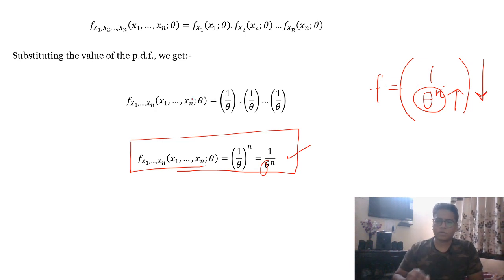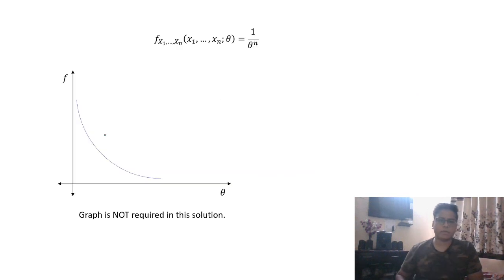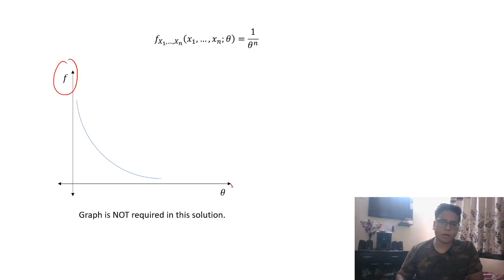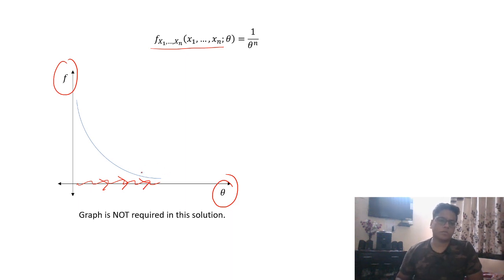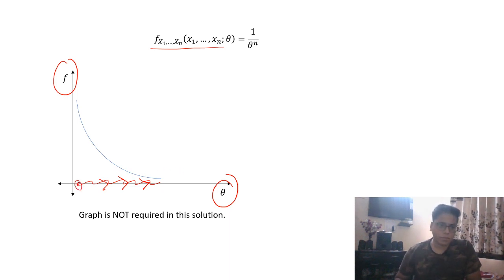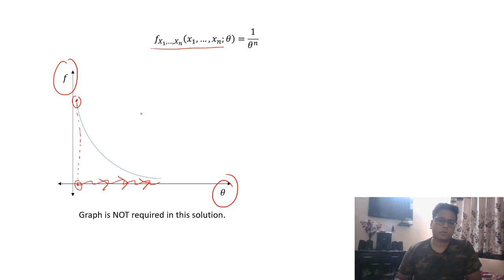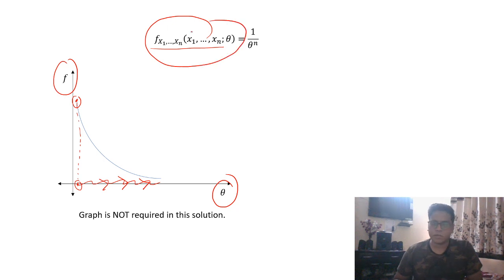I can show this as a graph — just for understanding, not from the exam's perspective. f and θ are inversely related. We need to choose θ such that this value is maximized. As θ moves rightward on the graph, the value of f decreases. So we can clearly see that θ has to be as small as possible, because the smaller θ is, the higher the value of f.